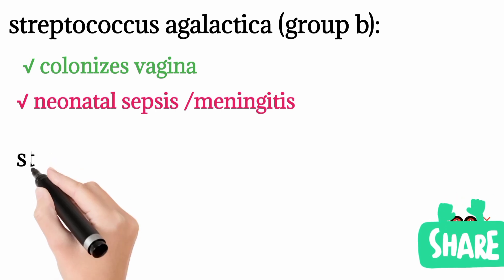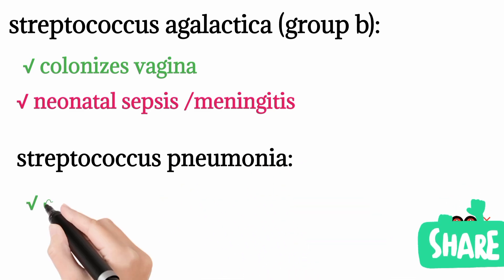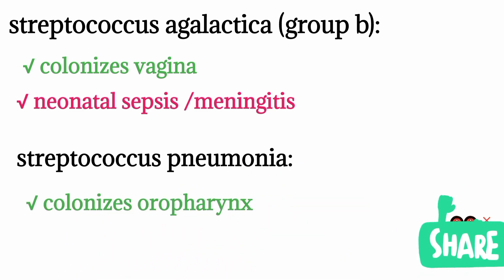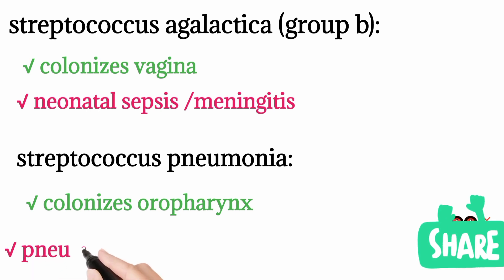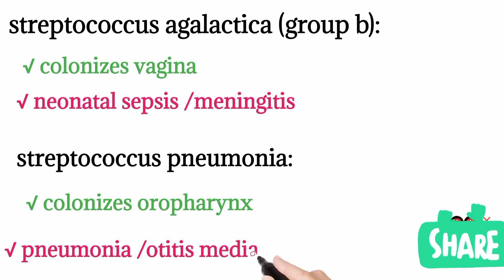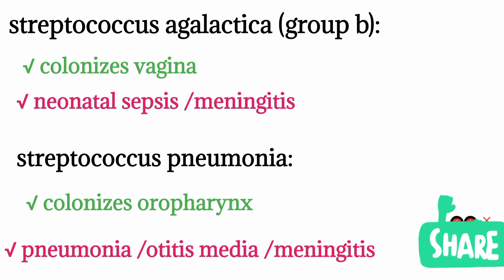Streptococcus pneumoniae normally colonizes the oropharynx. Colonization means it can live there, but when it gets the opportunity — such as in a weakened immune system — it will invade. Streptococcus pneumoniae can invade the lungs causing pneumonia, it can cause otitis media — ear infection — and it can cause meningitis affecting the brain. Remember, Streptococcus pneumoniae causes meningitis in adults, whereas Streptococcus agalactiae causes meningitis in newborns, typically from zero to six months.